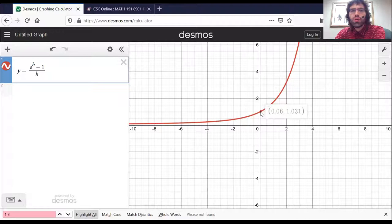At zero itself, of course, this is undefined. But the closer we get to zero, the closer we get to one.